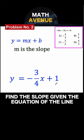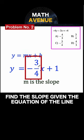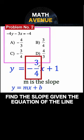So it's clear that from this form, our m is negative 3 over 4, and that is the slope of the given line. And so the answer is letter c.